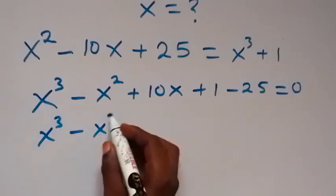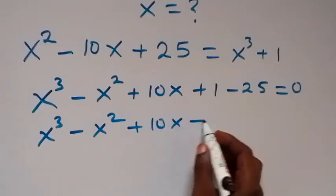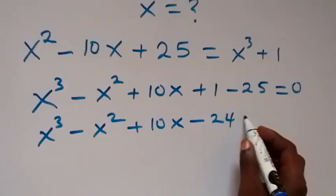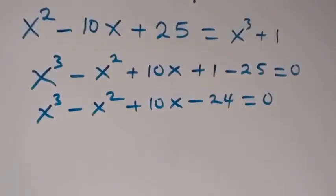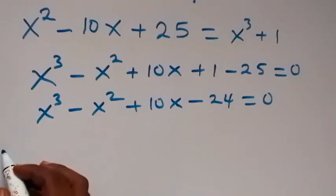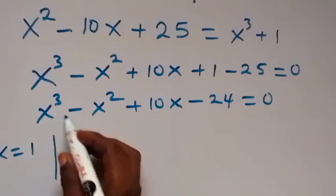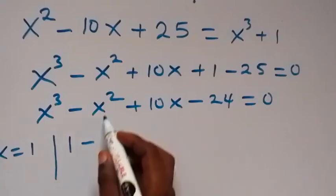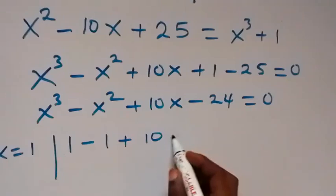So we have x cubed minus x squared plus 10x, then minus 24 equals zero. From here we can get one of the roots of this polynomial by inspection. Let's put x equals 1: one raised to power 3 is 1, minus 1 squared is 1, plus 10 times 1 is 10, minus 24.